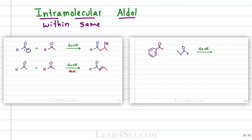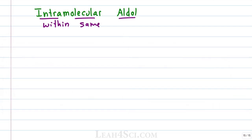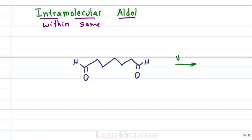In the last few videos, we looked at the aldol reaction showing molecules attacking the same type or different type between aldehydes and ketones. But for this reaction, we're looking at a starting molecule that has two carbonyls on the same molecule so that instead of attacking another molecule, it's going to attack itself.